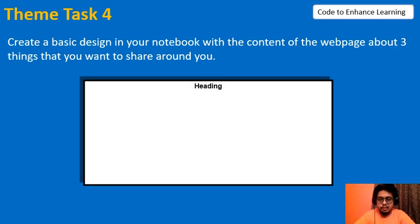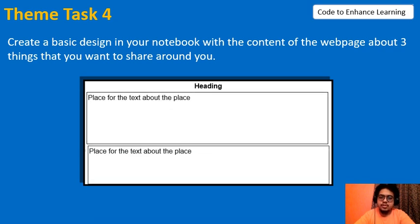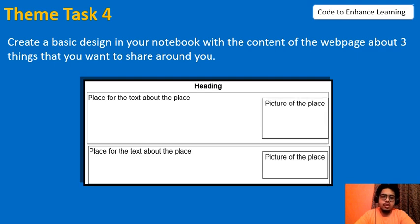By now you must be having an idea about a web page. Now it is time to work on our theme of making a web page to share things around us. It's good practice to first jot down all the ideas of how the page would look like in an abstract form. For example, my web page is going to be about three places to visit around me. On the top of the page, we will write our heading followed by the description of three places. On the left side we will write the paragraph describing the place, and on the other side we will put an image of that place. Each of these descriptions is also known as divisions.